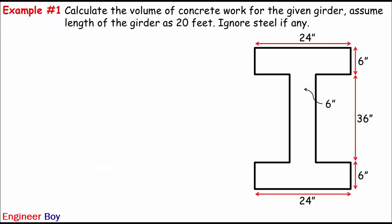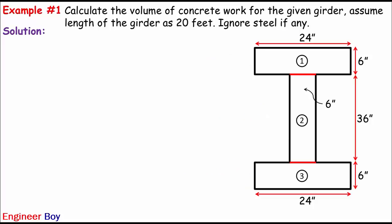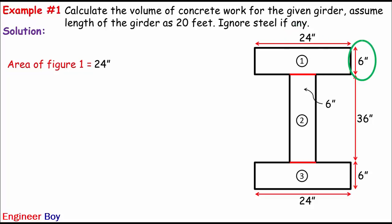Now let's come into the solution. Remember the first step: convert the complicated geometry into simple geometric shapes. Just like in this diagram, we get only three rectangles. Now we can calculate the sectional area for each rectangle. The area of the first rectangle is 24 inches — the length — times the thickness or height of this rectangle, which is 6 inches. If you multiply these, we get 144 square inches as the area of the first rectangle.